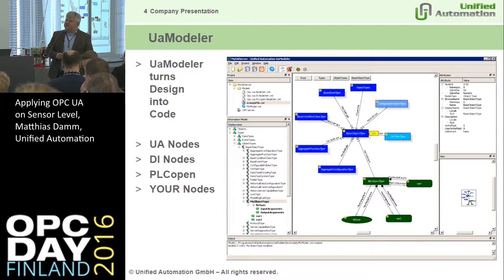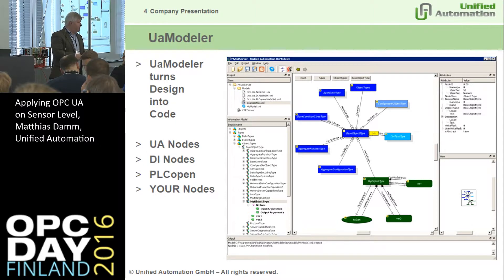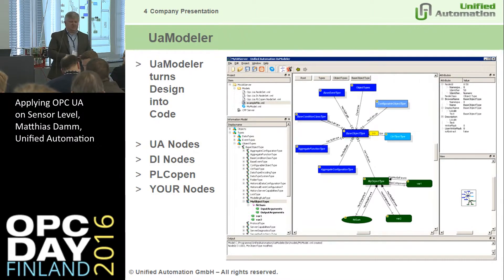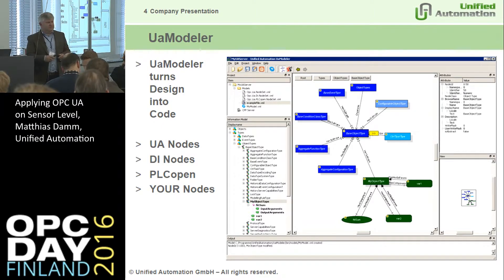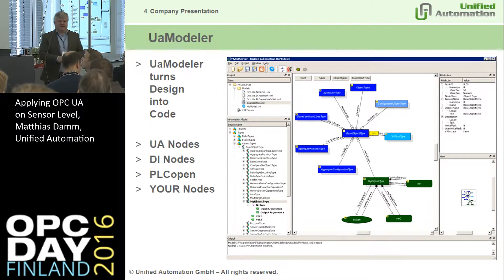The UA Modeler is a very important tool. Many people use it just for modeling and export the model as an XML file, which is the standard machine-readable format defined by OPC UA and typically accompanies companion specifications. But you can also load existing models or models you created for your own product and generate code from them. You then only need to write the glue code to integrate your product's information with the information model — all the complex OPC UA details are handled by the generated code.